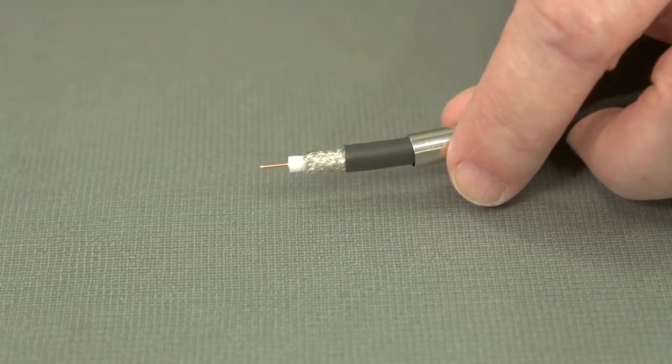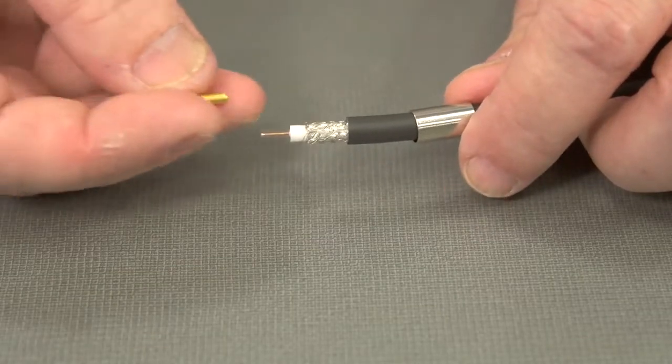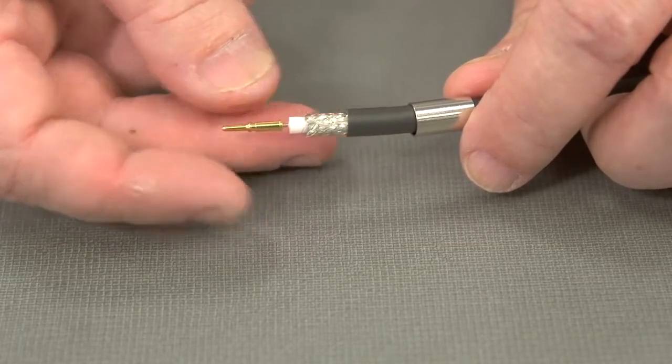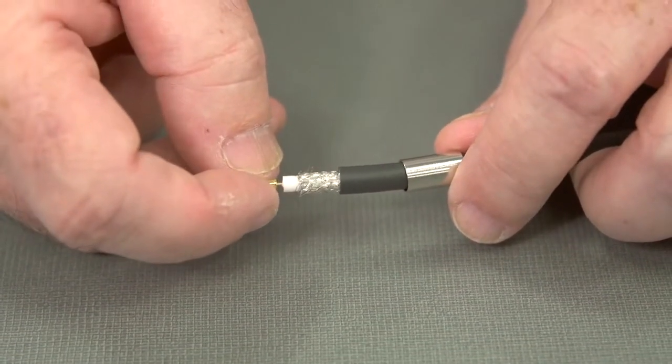As a next step, we'll want to attach our center pin to this center conductor. Let's put it on. We want to make sure that it fits nice and snug.